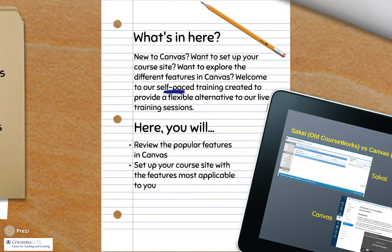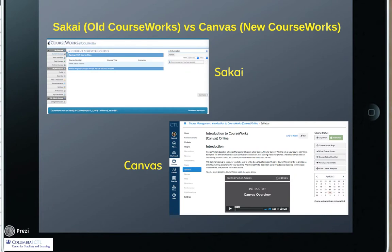This self-paced training is set up to prepare you to utilize the various features offered by CourseWorks in order to provide an enriching learning experience for your students. In this course you will review the popular features in Canvas and set up your course site with the features most applicable to you. We will also mention the differences between the old CourseWorks Sakai and the new CourseWorks Canvas, which may help you prepare better while you set up your course site.